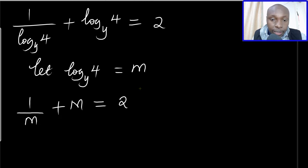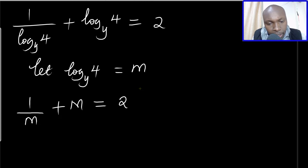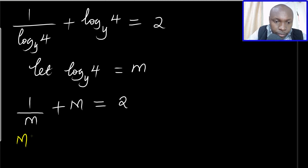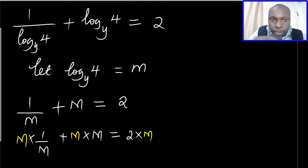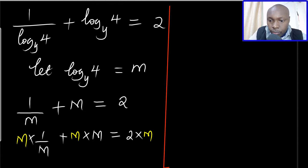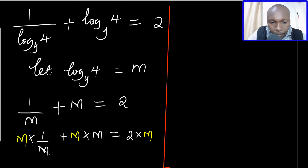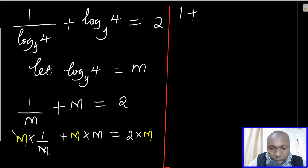Now having that, if I multiply each term by m — multiplying 1 divided by m by m, plus m times m, equals 2 times m — this gives 1 plus m squared equals 2m.